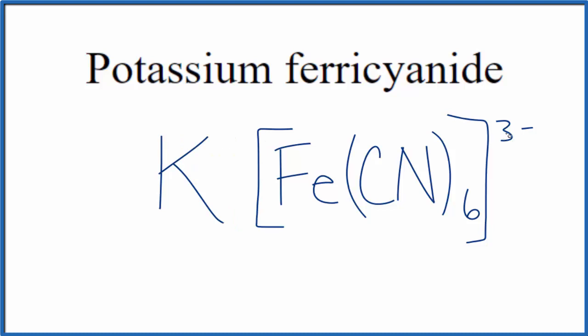Because we have this 3 minus here, potassium on the periodic table is in group 1, that's 1 plus, we're going to need 3 potassium, so 3 times 1 plus, that's 3 plus, and that'll balance out the 3 minus.